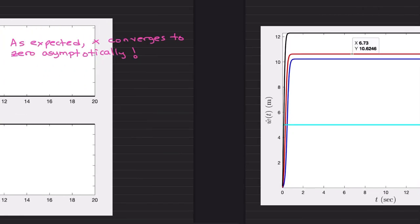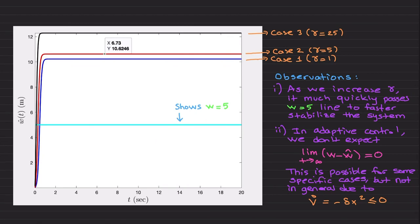In this final portion, I would like to show you w hat histories for these three cases. First of all, this light blue shows w equals to 5. Blue is basically where w hat converges for case 1, gamma equals to 1, then 5 and 25. We have the following two key observations. Observation number 1: as we increase gamma, it much more quickly passes w equals to 5 line.